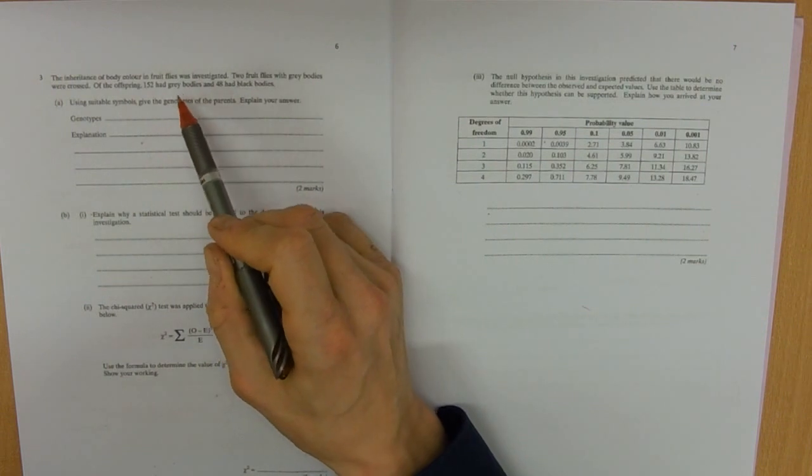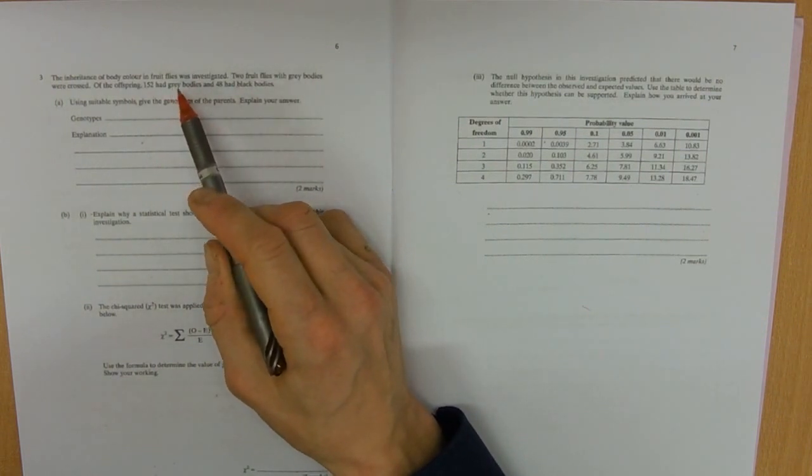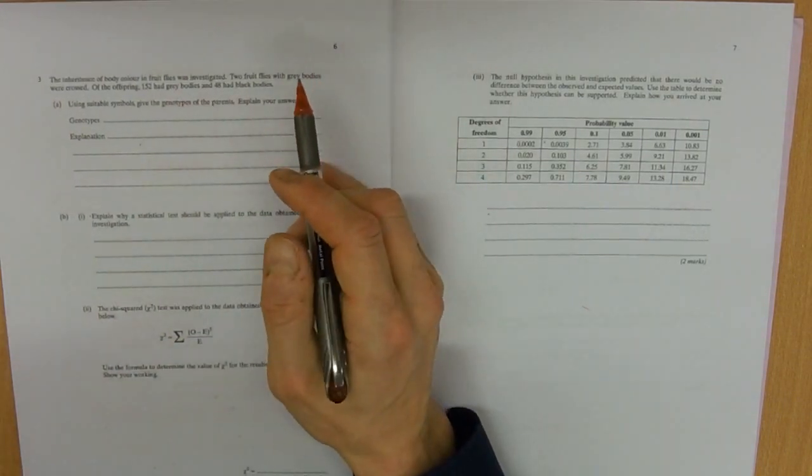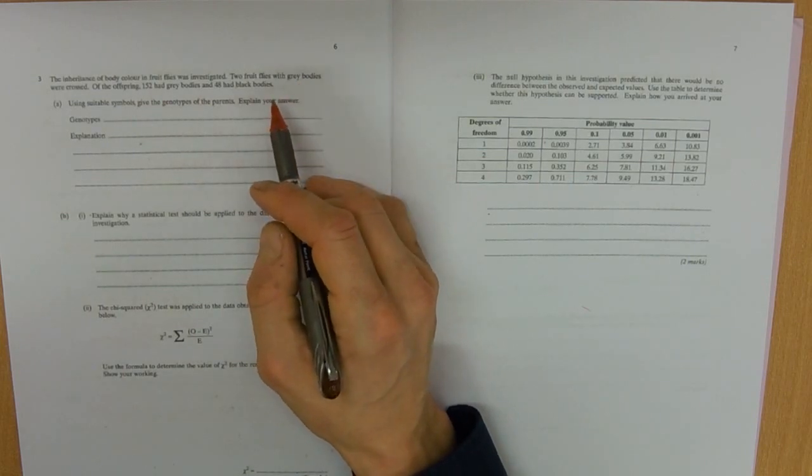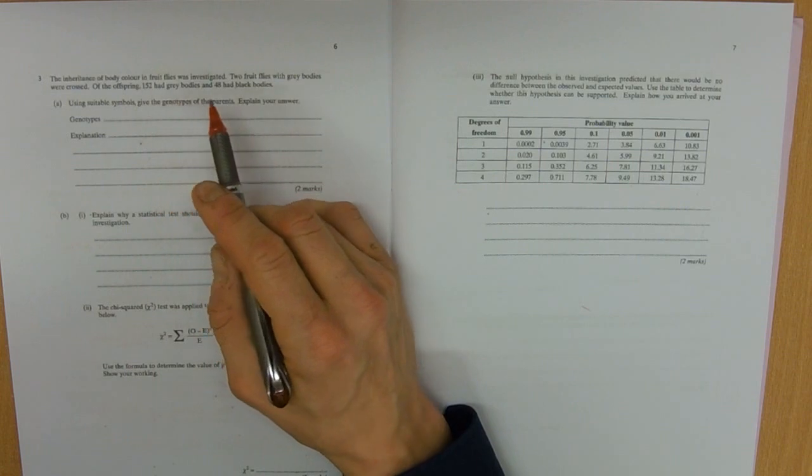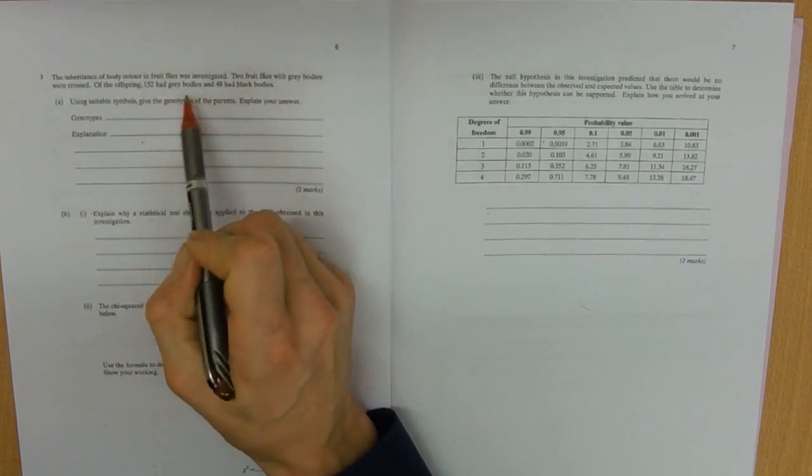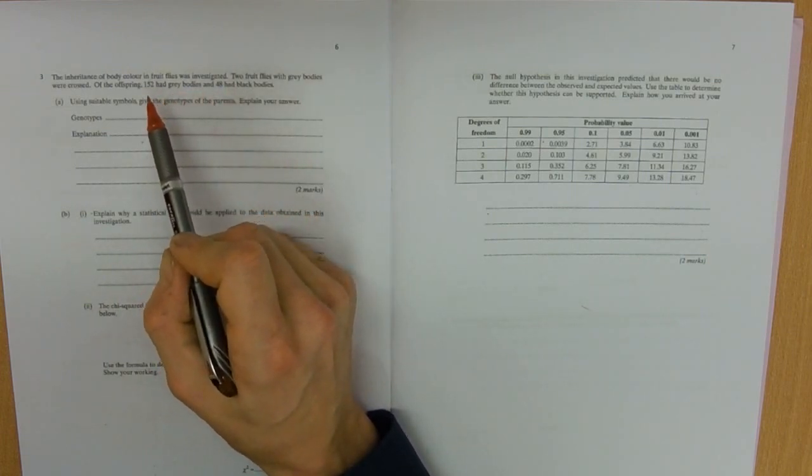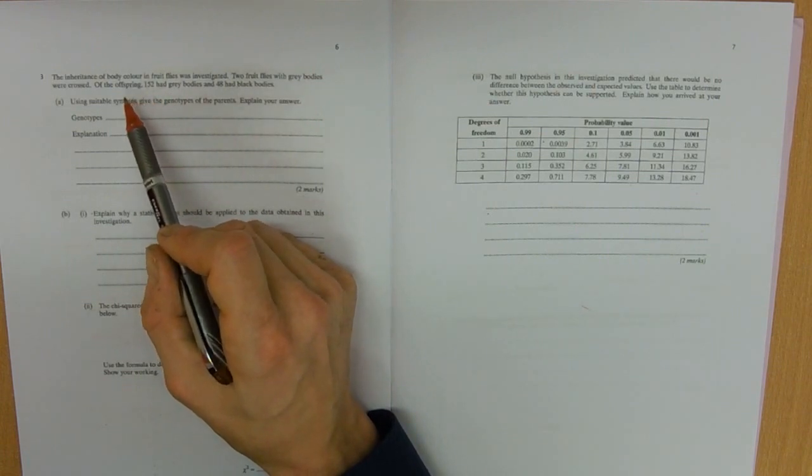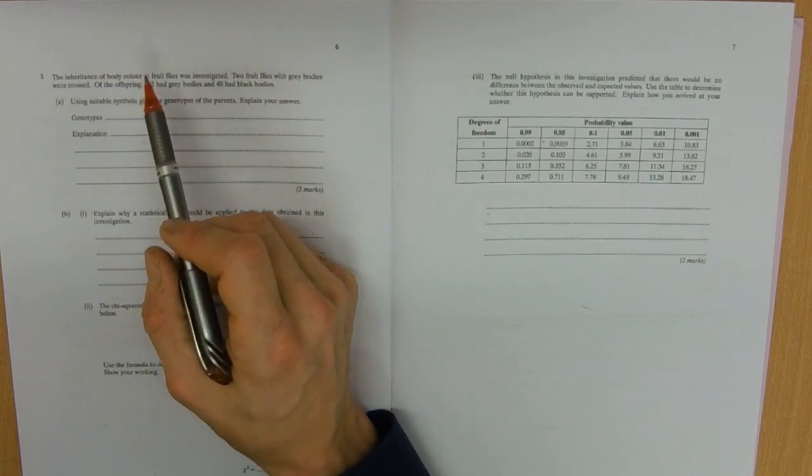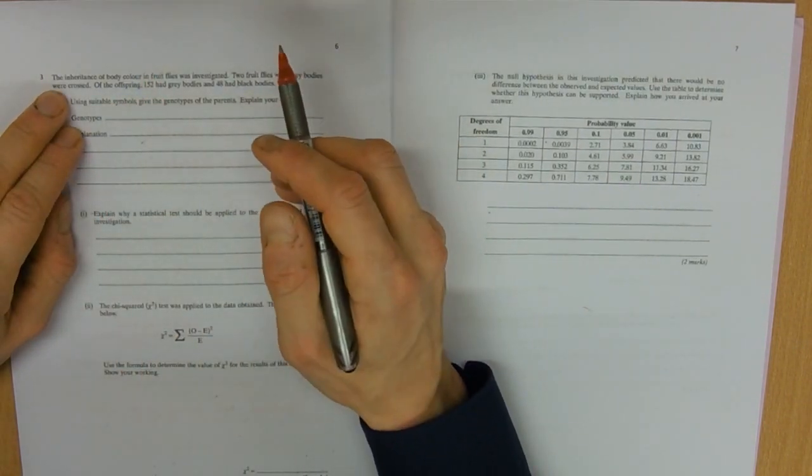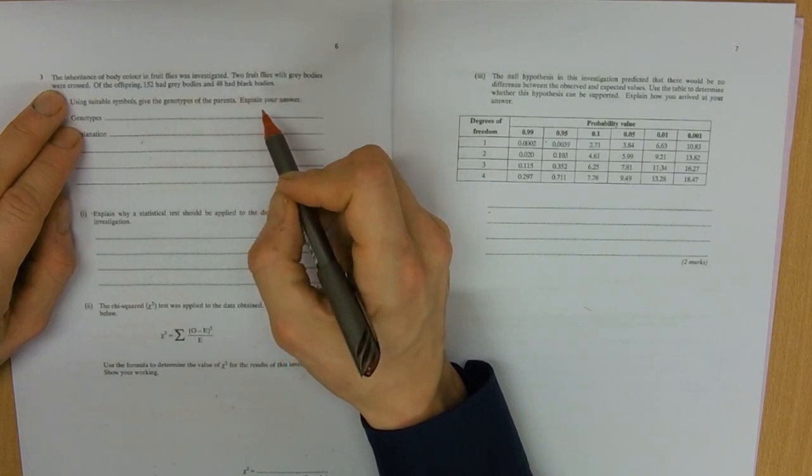Inheritance of body colour in fruit flies, Drosophila, little fruit flies you occasionally see them around bowls of fruit. Two fruit flies with grey bodies were crossed and of the offspring 152 had grey and 48 had black. That's telling us if we've got grey bodied fruit flies producing a different colour, then our original two must have been heterozygous with a hidden recessive allele for black.